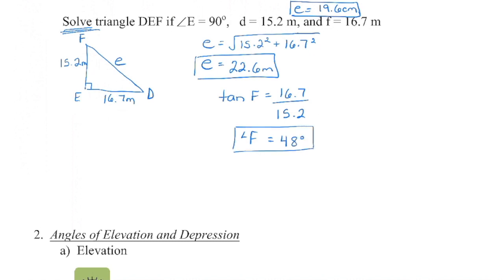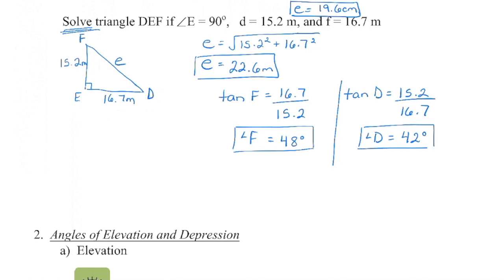Now you have a choice. You could use the tangent ratio again to solve for angle D — this is now the opposite, this is now the adjacent. So the tangent of D equals the opposite side to D divided by the adjacent side to D, which gives 48 degrees — rounding to the nearest whole number, that's actually 42 degrees. Alternatively, since the sum of interior angles is 180, you could go 180 minus 90 minus 48 to get 42 degrees as well.